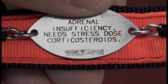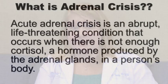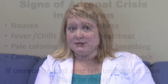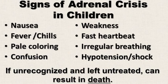Children with CAH typically wear some sort of medic identification that states that they have adrenal insufficiency, such as the one shown here. It is important to understand what adrenal crisis is and to be able to recognize the signs and symptoms associated with it. An adrenal crisis is defined as an abrupt, life-threatening condition that occurs when there is not enough cortisol. Cortisol is a hormone necessary for life — it aids in the regulation of many aspects of the human body's functioning, including blood pressure and blood glucose.